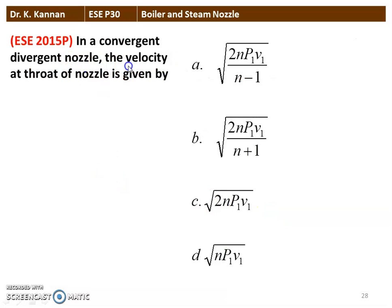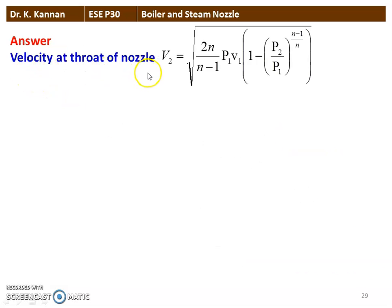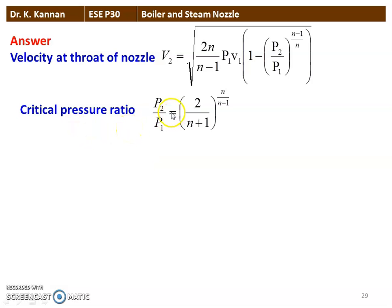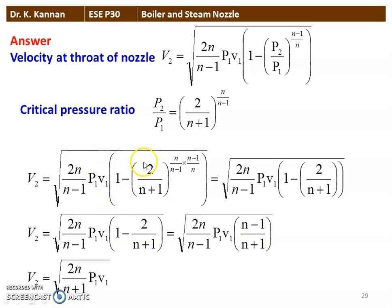In a convergent-divergent nozzle, the velocity at the throat is given by: V₂ = √(2n/(n+1) × P₁V₁). Starting from the general velocity equation V₂ = √(2n/(n−1) × P₁V₁ × [1 − (P₂/P₁)^((n−1)/n)]) and substituting the critical pressure ratio P₂/P₁ = (2/(n+1))^(n/(n−1)), the exponent terms cancel and the expression simplifies to V₂ = √(2n/(n+1) × P₁V₁), which is the answer.